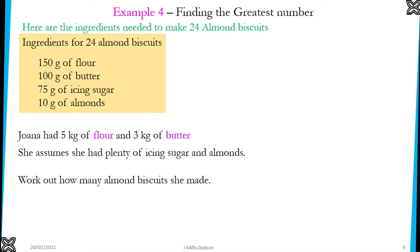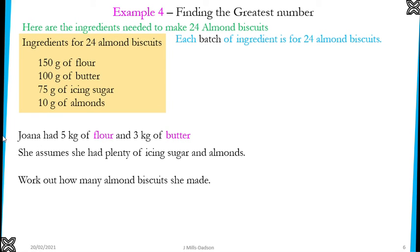Let's look at our last example, similar to the previous one. We have ingredients for 24 almond biscuits. Joanna has 5 kilograms of flour and 3 kilograms of butter, and we can assume she has enough of the rest. We need to work out the maximum number of biscuits she can make. The ingredients are in grams, so we need to convert kilograms to grams. Each batch of ingredients is for 24 almond biscuits, and we keep taking batches until we run short of flour or butter.